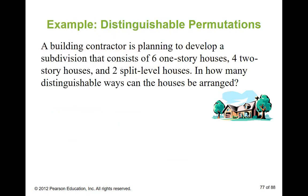A building contractor is making a subdivision with six one-story houses, four two-story houses, and two split-level houses. A split-level means when you go through the front door you have stairs going up and stairs going down — you're entering on a landing. It's common in mountain areas to avoid wasted space below the living level.